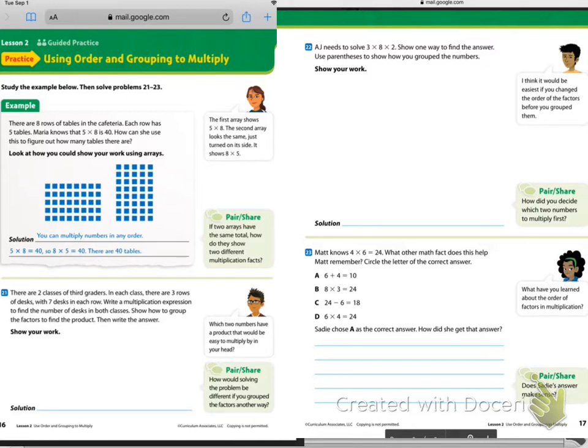The example at the top here says there are eight rows of tables in the cafeteria. Each row has five tables. Maria knows that five times eight is 40. How can she use this to figure out how many tables there are? Let's look at how you could show your work using arrays. The first array shows five times eight. The second array looks just the same, but it's been turned on its side. So this one is actually showing us eight times five.